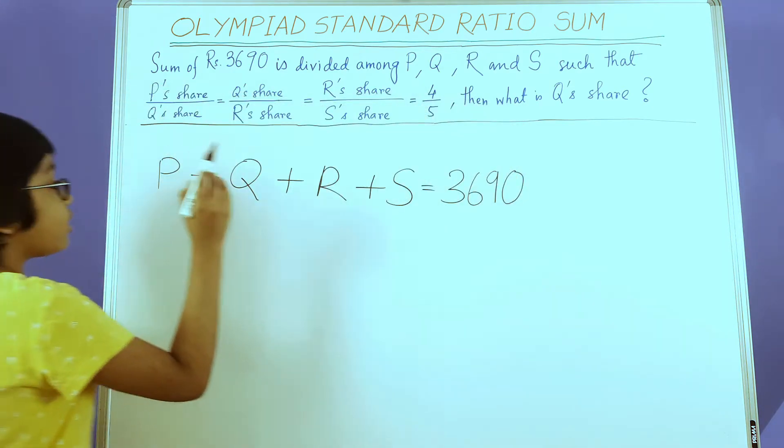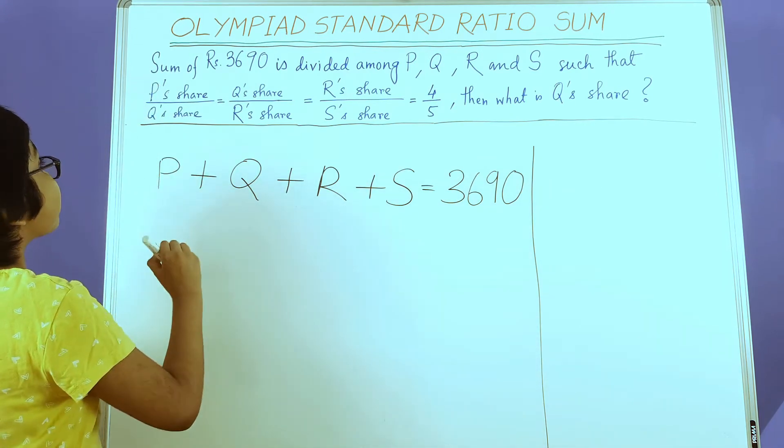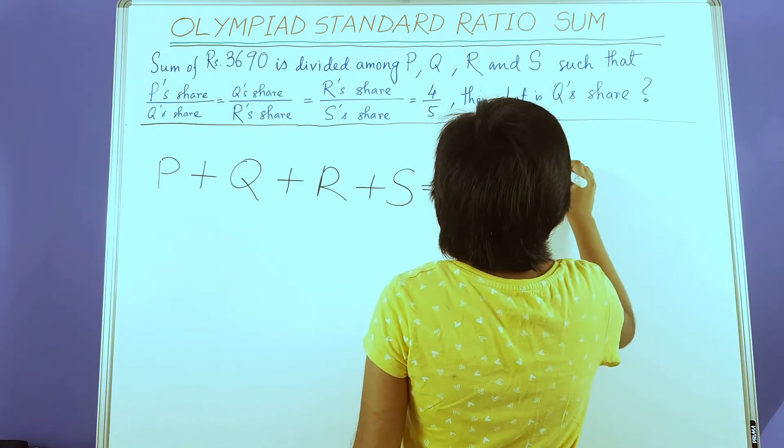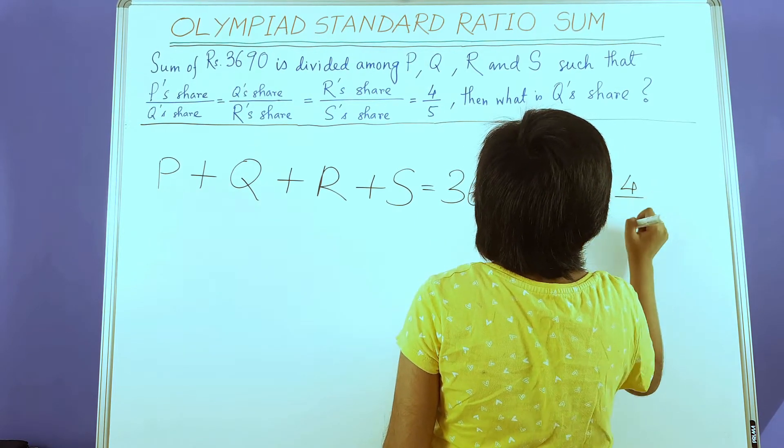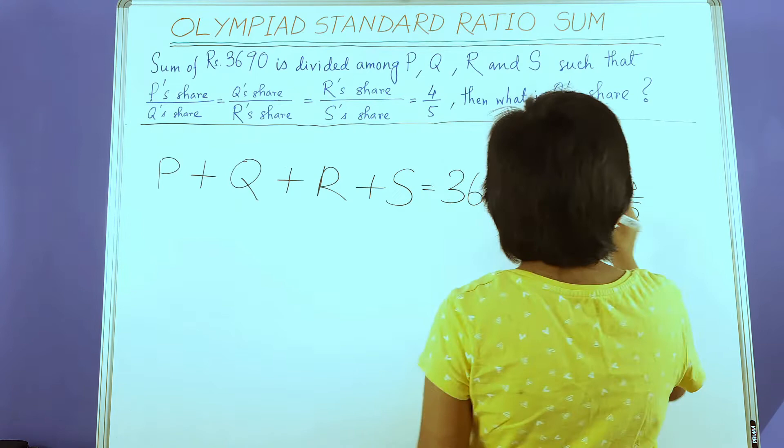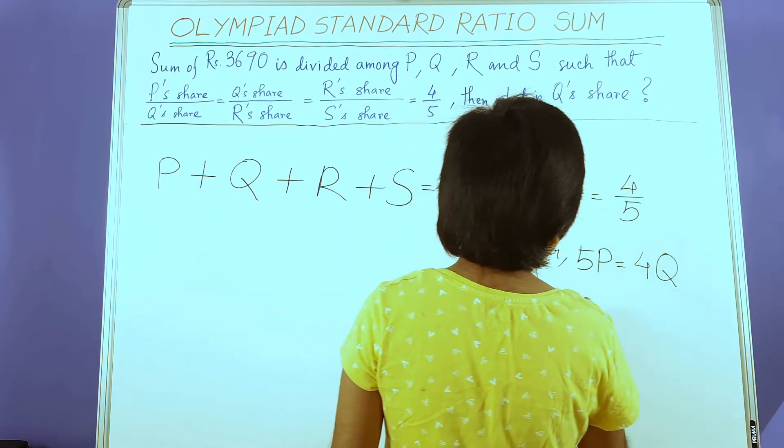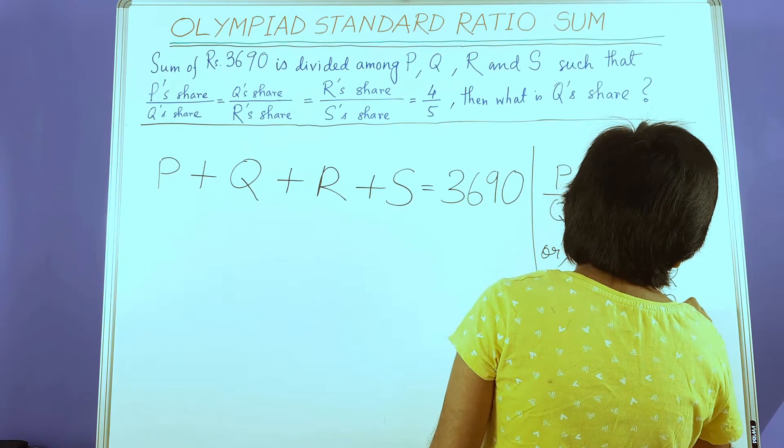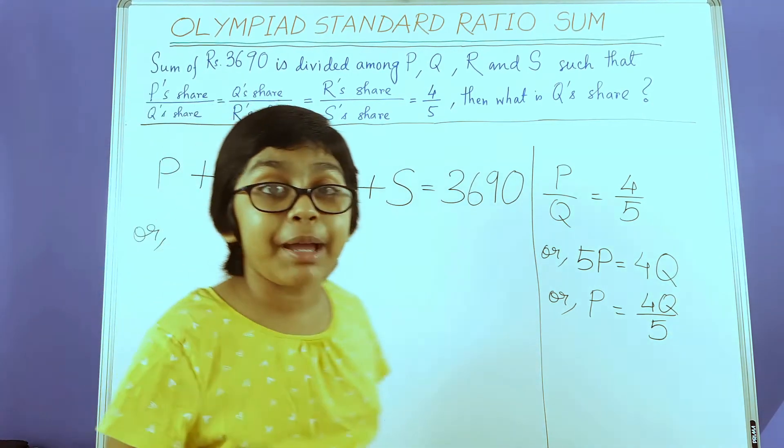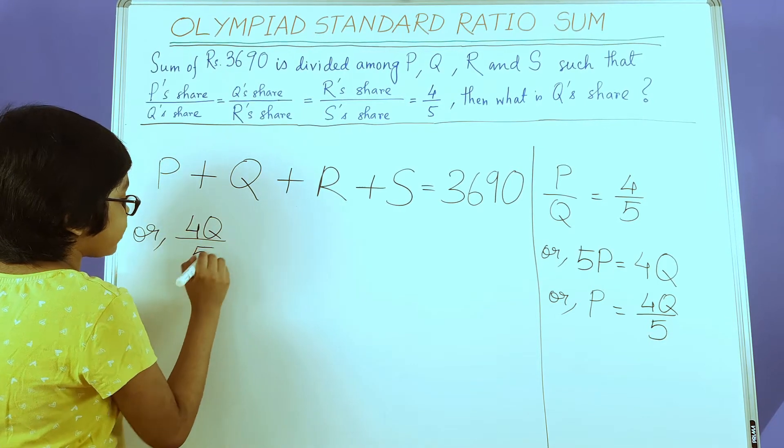We need to take care of P, R, and S. We will solve them in the rough column. To express P in the form of Q, we have the ratio that P's share by Q's share is 4 by 5, so P by Q equals 4 by 5. Now we do cross multiplication: 5P = 4Q. Before we forget the value of Q, let us substitute. So P is 4Q by 5.